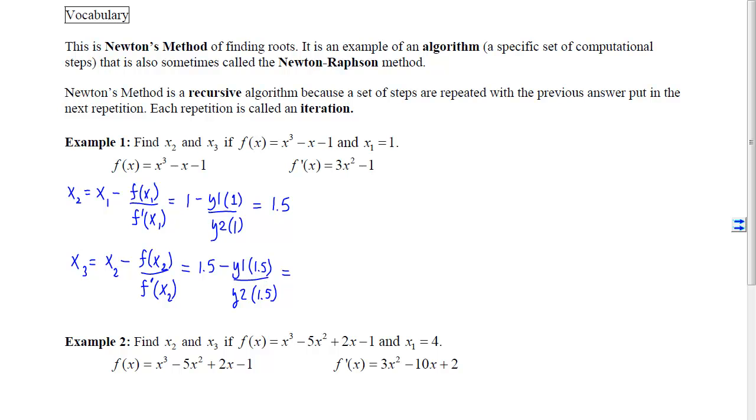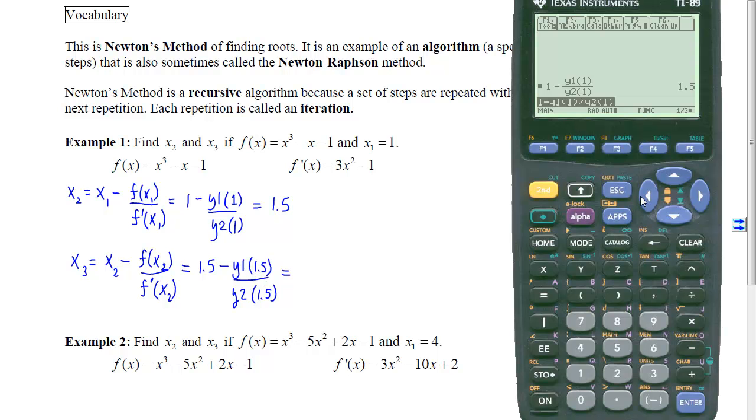So again, we'll go to our calculators, and we will type in or overwrite whichever 1.5 minus y1 of 1.5 divided by y2 of 1.5. Again, hit diamond, enter, and we see that x sub 3 will be 1.3478.